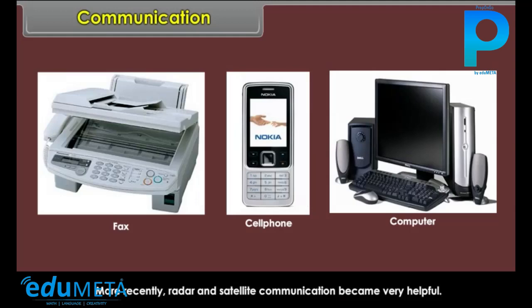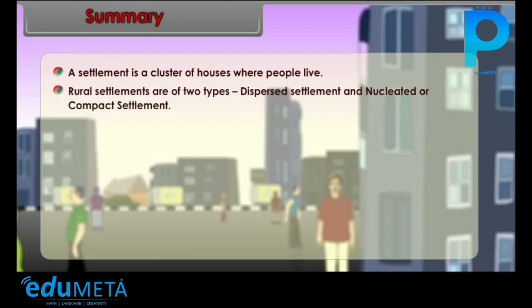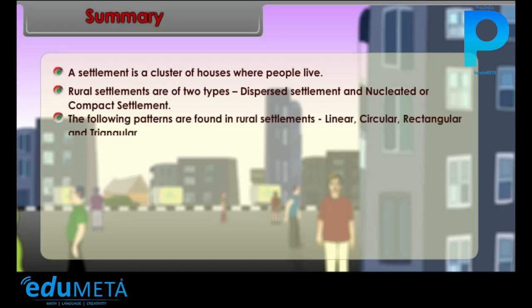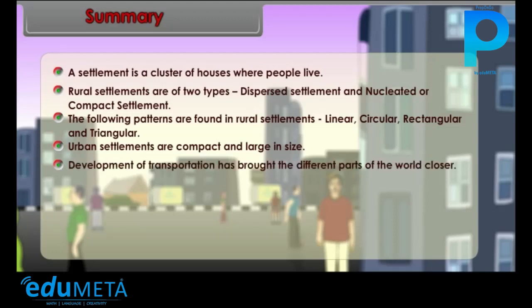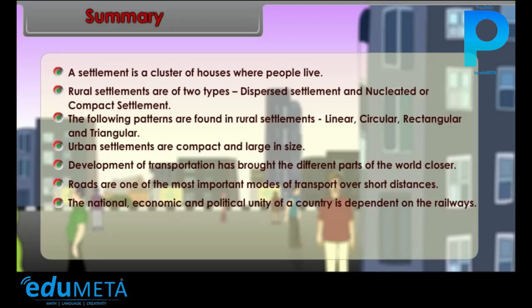Summary: A settlement is a cluster of houses where people live. Rural settlements are of two types: dispersed settlement and nucleated or compact settlements. The following patterns are found in rural settlements: linear, circular, rectangular, and triangular. Urban settlements are compact and large in size. Development of transportation has brought the different parts of the world closer. Roads are one of the most important modes of transport over short distances. The national, economic, and political unity of a country is dependent on the railways. Water transport is the most economical mode of transport. Air transport is the quickest mode of transport but also the costliest.